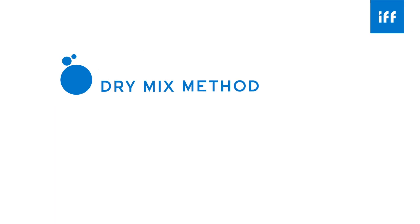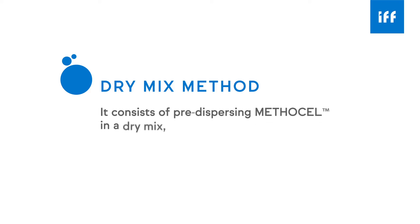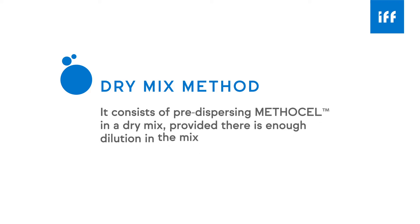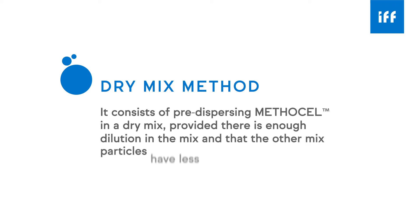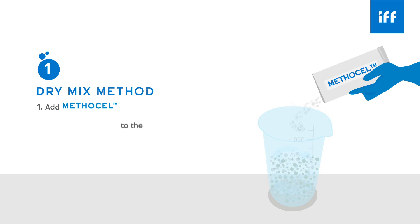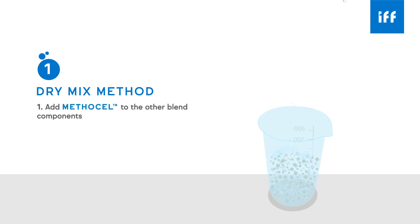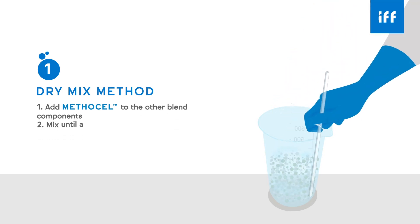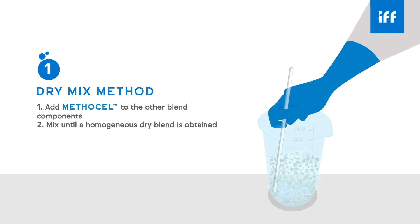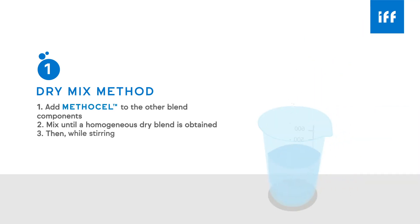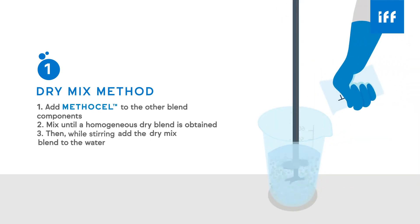The first method is called the dry mix method. It consists of pre-dispersing Methylcell in a dry mix, provided there is enough dilution in the mix and that the other mixed particles have less affinity to water. First, add Methylcell to the other blend components and mix until a homogenous dry blend is obtained. Then, while mixing thoroughly, add the dry mix to the water to obtain a homogenous mixture.